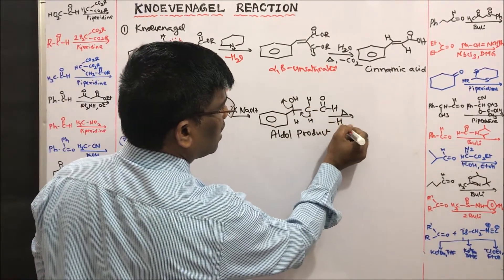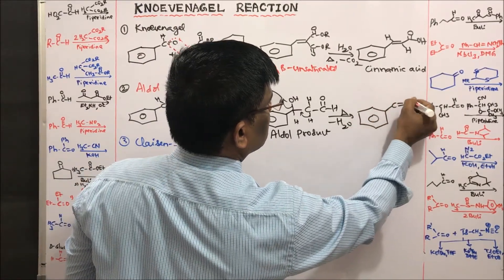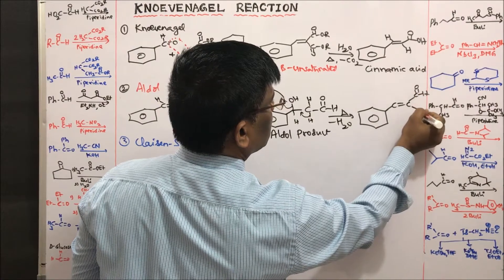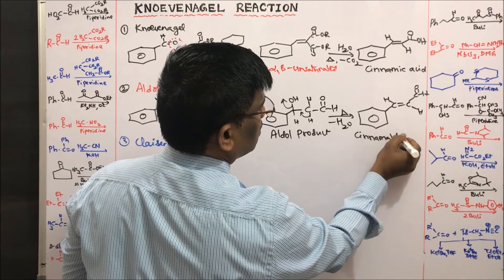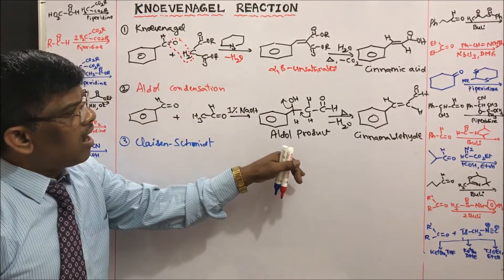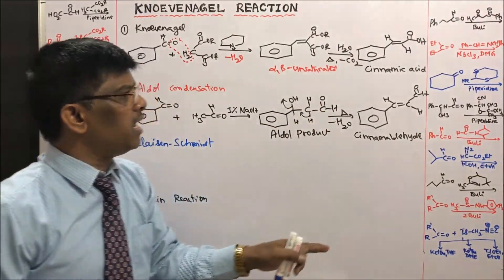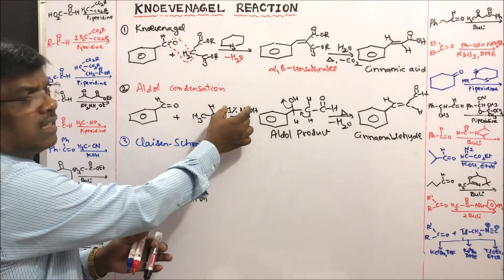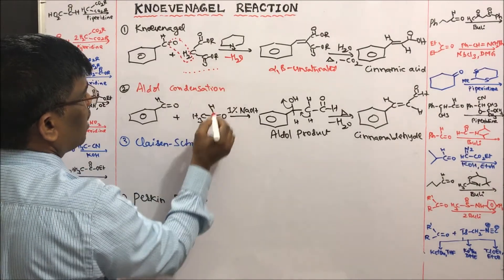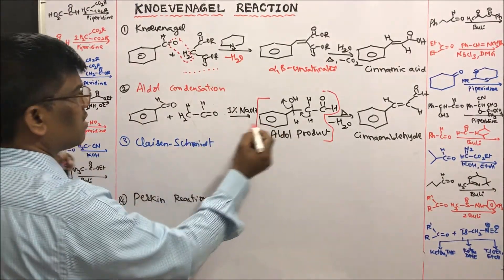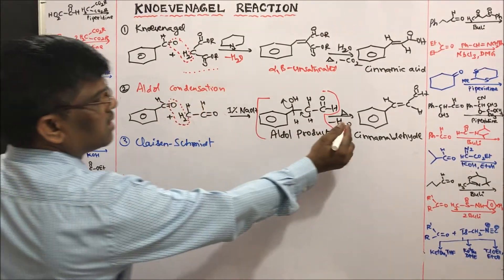This aldol product, upon heating, undergoes elimination — minus water — to give cinnamaldehyde. So the aldol product is first formed, and then condensation, which is the removal of water from this alcohol, gives cinnamaldehyde. The base used is 1% dilute NaOH, and water is eliminated as a byproduct.